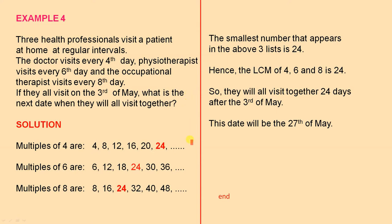And here's how we find the solution. The multiples of 4 are those numbers. The multiples of 6 are those numbers. And the multiples of 8 are those numbers. The smallest number that appears in the above 3 lists is 24 — highlighted in red. Hence the LCM of 4, 6 and 8 is 24.